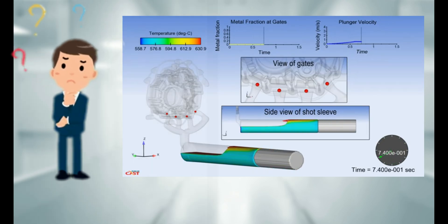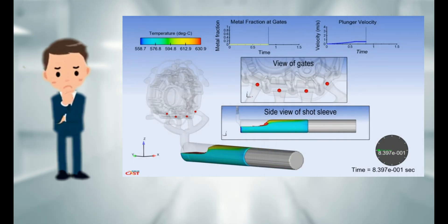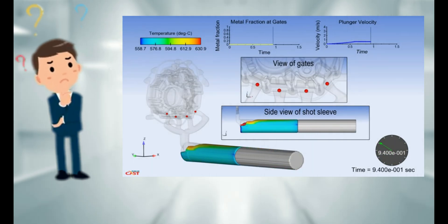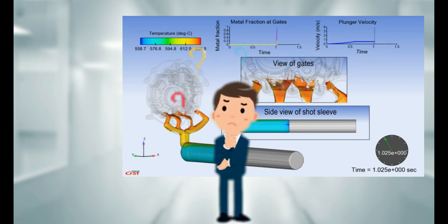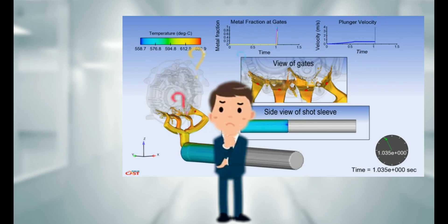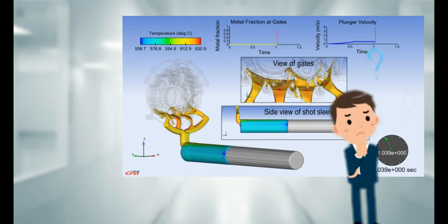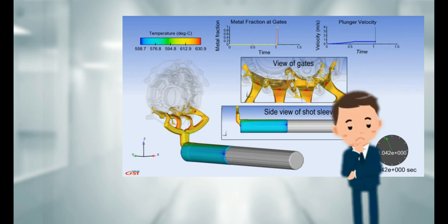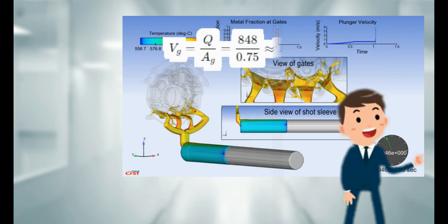For example, if our flow rate is 848 cubic inches per second and the gate area is 0.75 square inches, the gate velocity will be shown on your screen.